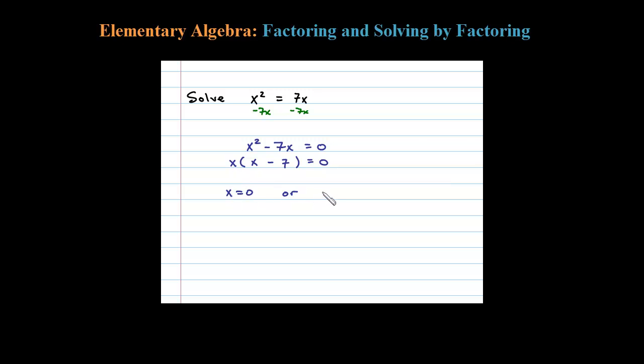So either x = 0 or x - 7 = 0. In this case if we add 7 to both sides we get our second solution here, x = 7. So either 0 will work or x = 7 will solve the original.